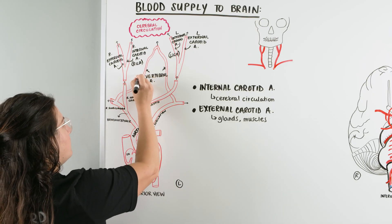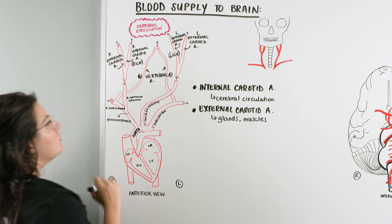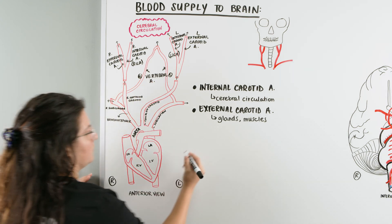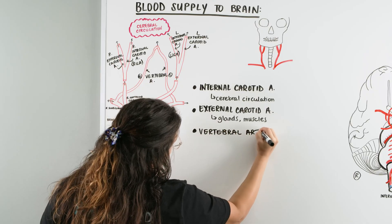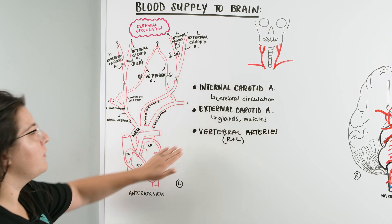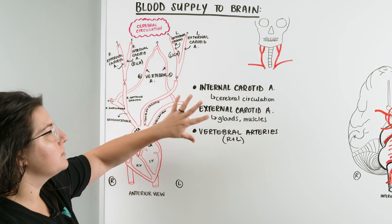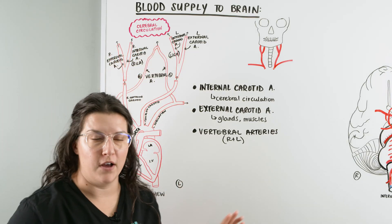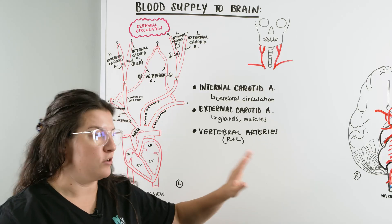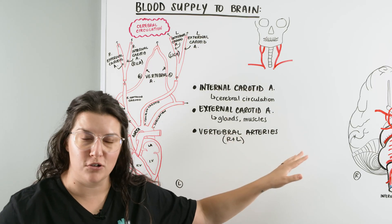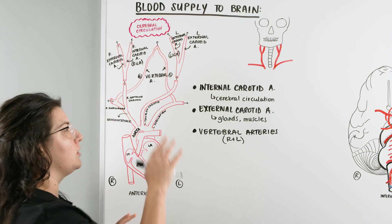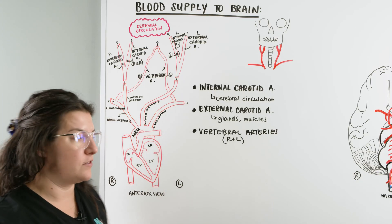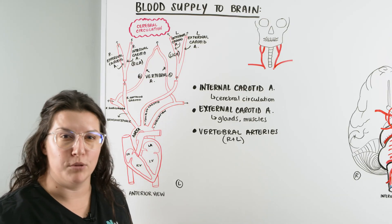So this is our right vertebral artery and this is our left vertebral artery — both flowing up into the cerebral circulation. These vessels supply blood into our cerebral circulation and will help us identify which vessels break off to deliver blood to different structures.